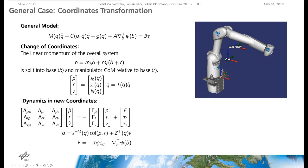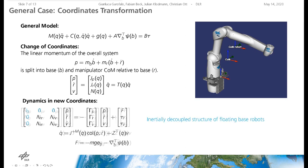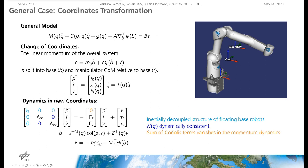The dynamics in new coordinates have a special structure which simplifies the control design. The linear momentum is inertially decoupled, which can be shown considering the manipulator as a floating base robot. Furthermore, the manipulator center of mass dynamics is orthogonal to the null space velocities because the null space projector is dynamically consistent. Additionally, the sum of Coriolis terms vanishes in the momentum dynamics.